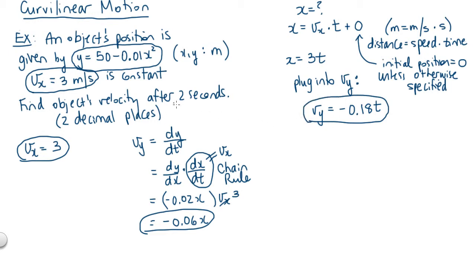This problem is asking us to find the object's velocity after 2 seconds. So let's calculate at t equals 2. We know vx is going to equal 3, that's constant throughout the problem. For vy, if we plug in t equals 2, we get negative 0.36. Now with these two values we can draw a quick sketch of what our velocity vector looks like: 3 units in the x direction and minus 0.36 units in the y direction.